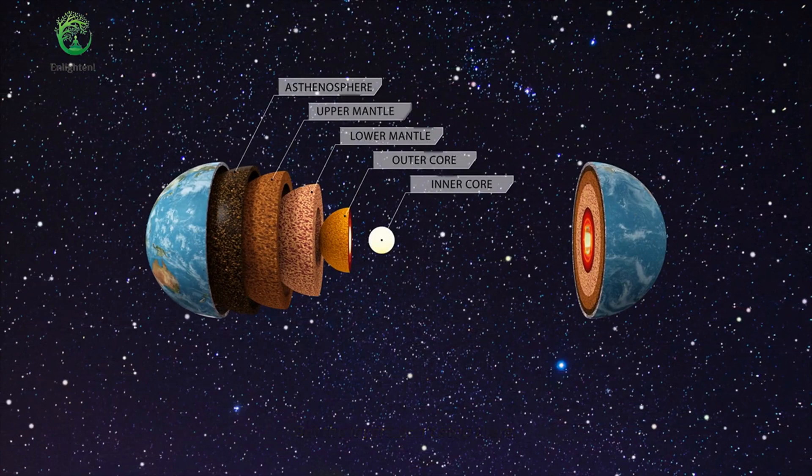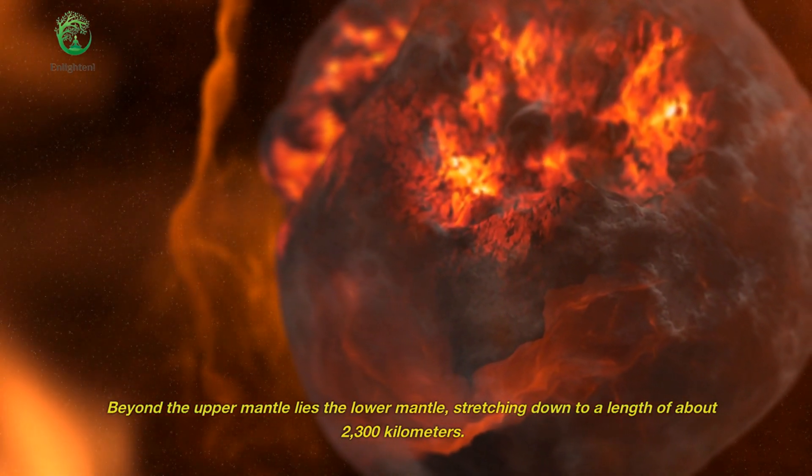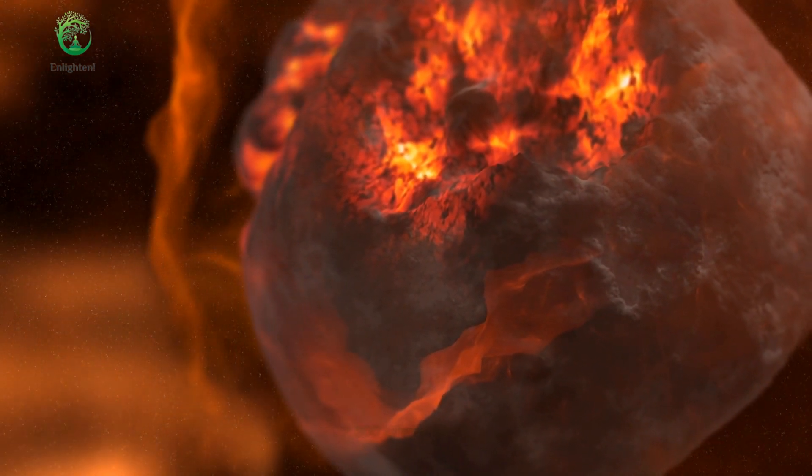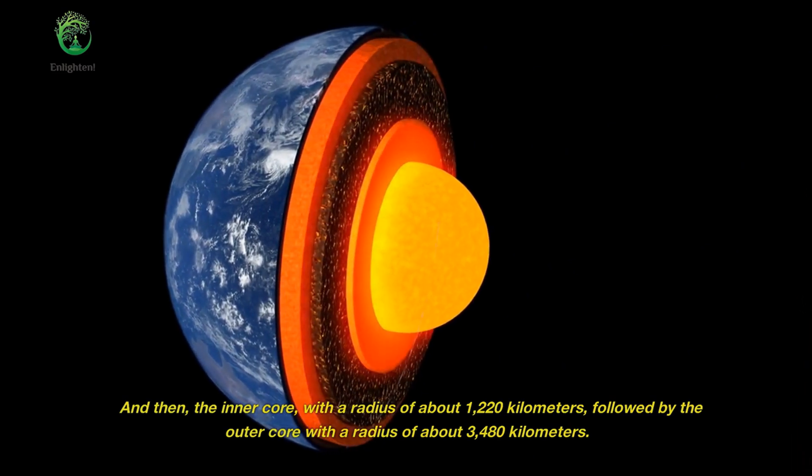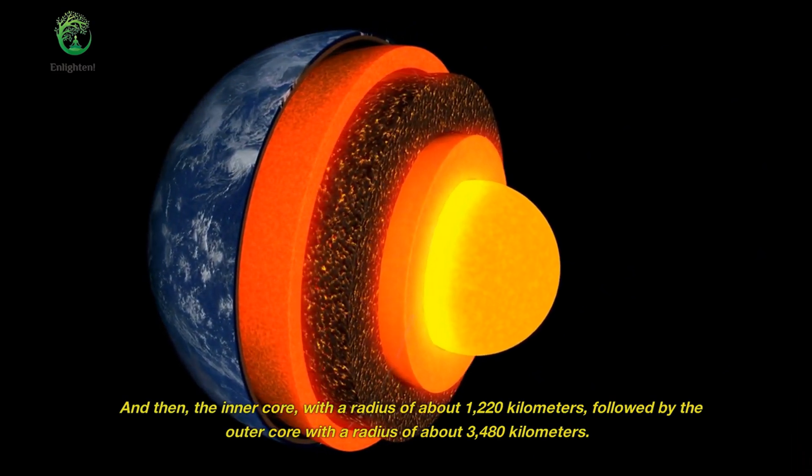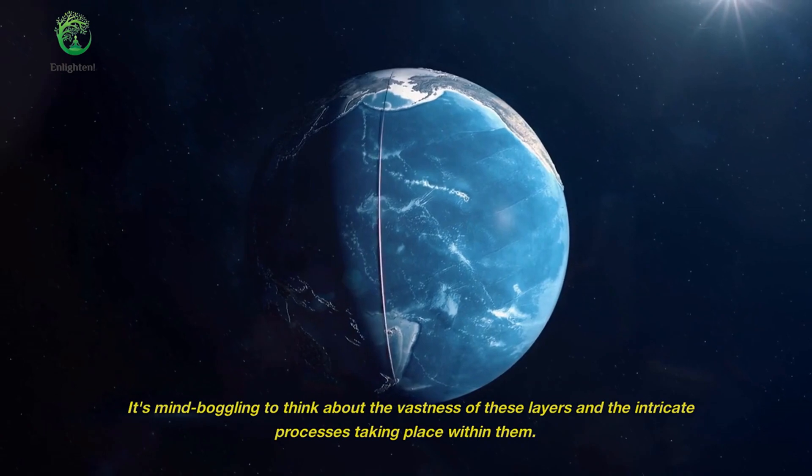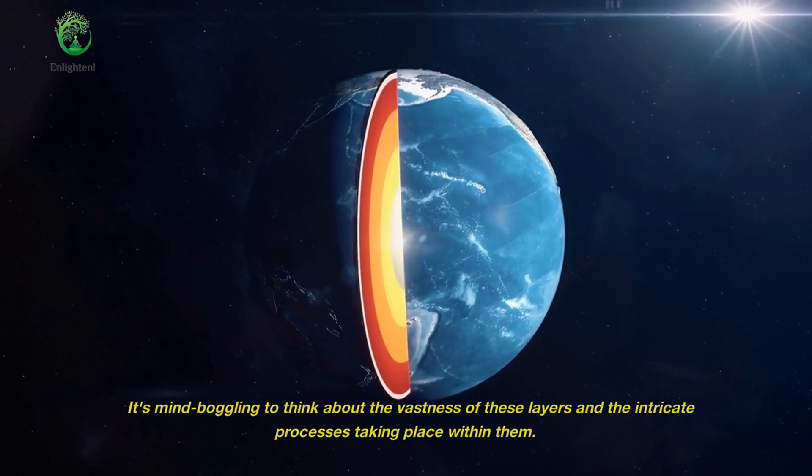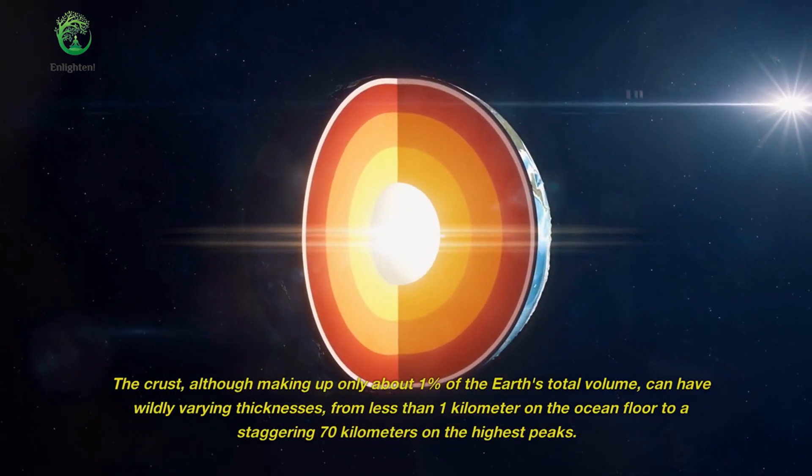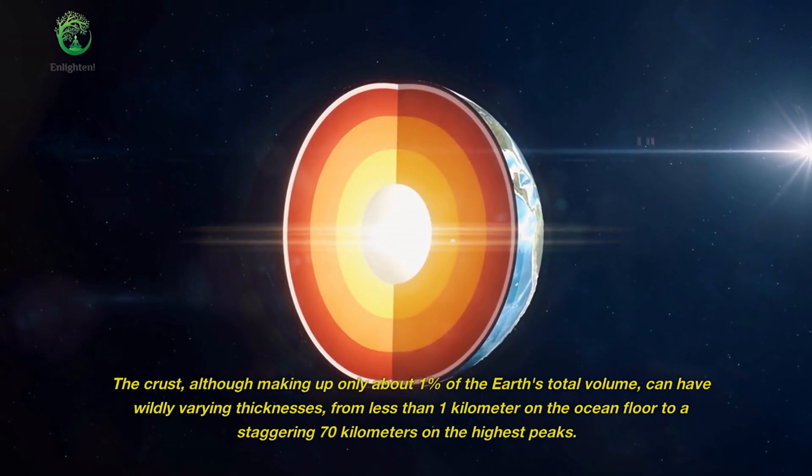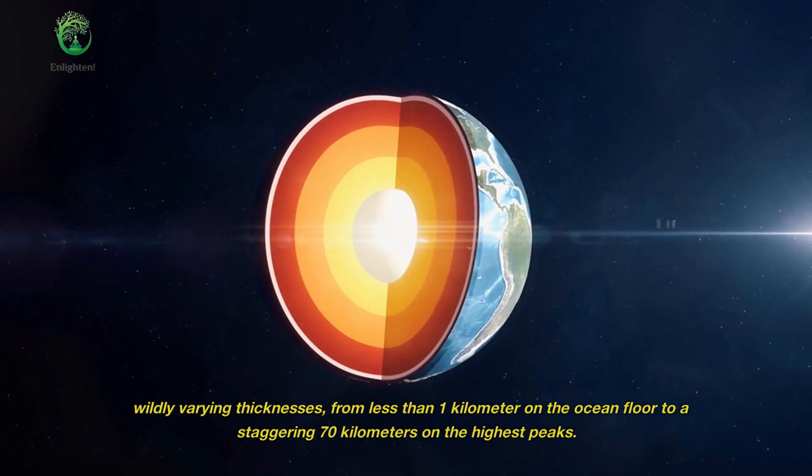But the layers don't stop there. Beyond the upper mantle lies the lower mantle, stretching down to a length of about 2,300 kilometers. And then, the inner core, with a radius of about 1,220 kilometers, followed by the outer core with a radius of about 3,480 kilometers. It's mind-boggling to think about the vastness of these layers and the intricate processes taking place within them. The crust, although making up only about 1% of the Earth's total volume, can have wildly varying thicknesses, from less than 1 kilometer on the ocean floor to a staggering 70 kilometers on the highest peaks.